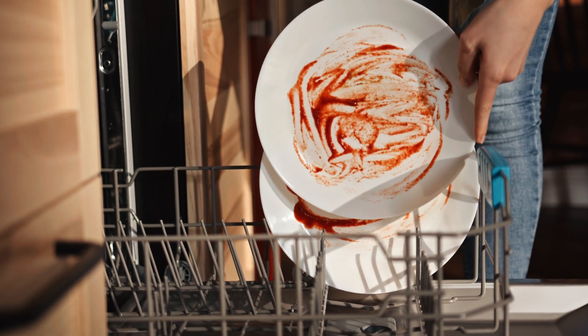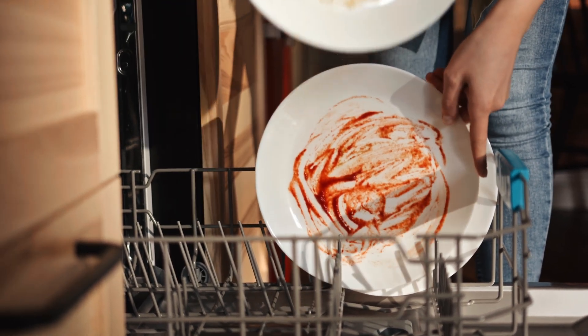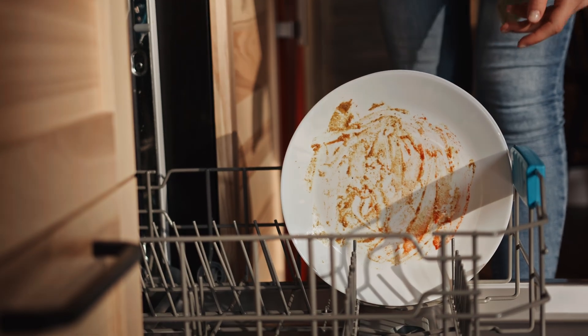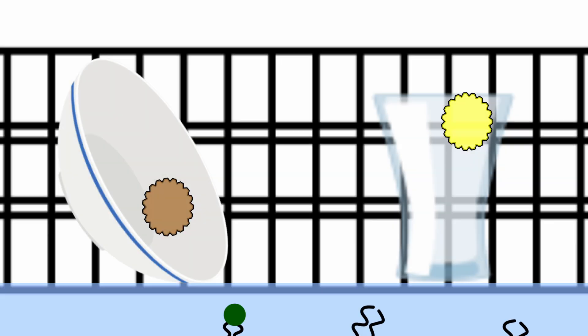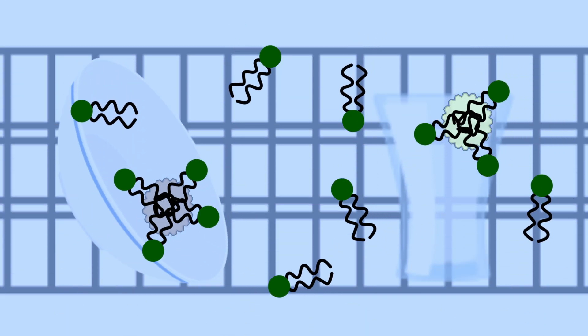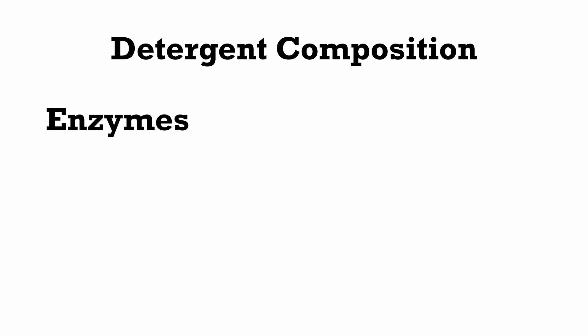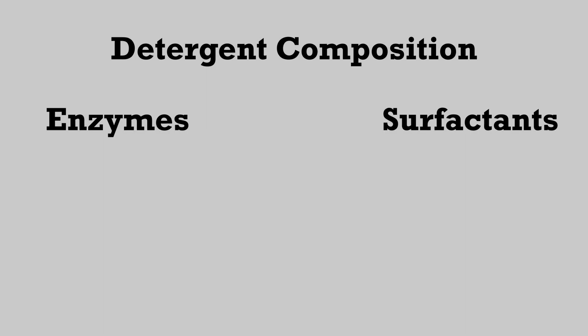Stains made up of grease molecules are usually some of the hardest stains to remove, as they are normally not soluble in water. This is where surfactants come in. They are able to surround the grease molecules with a water soluble surface, allowing them to be carried away by the water when the machine drains. For more info on how surfactants function, check out my video on how washing machines work.